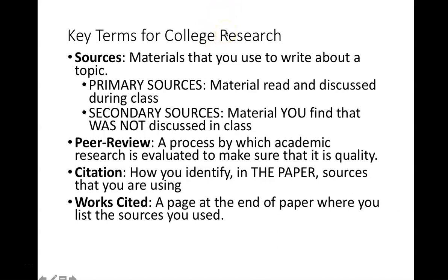So a quick breakdown of college research. College research is done in various classes across all levels of your university experience. You will often be asked to find sources, which can mean several things throughout your college experience. Sources are materials that you use to write about a topic. Primary sources oftentimes are material you read and discussed during class. Secondary sources are often material you find that was not discussed in class — often sources that are written about something.